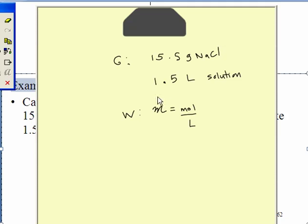So the very first thing that we do whenever we're solving a problem is we write out the values that we're given. We're given that we have 15.5 grams of sodium chloride. We're also given that we have 1.5 liters of solution. And we want our molarity, which by definition is moles of our solute, which is sodium chloride, over liters of solution.